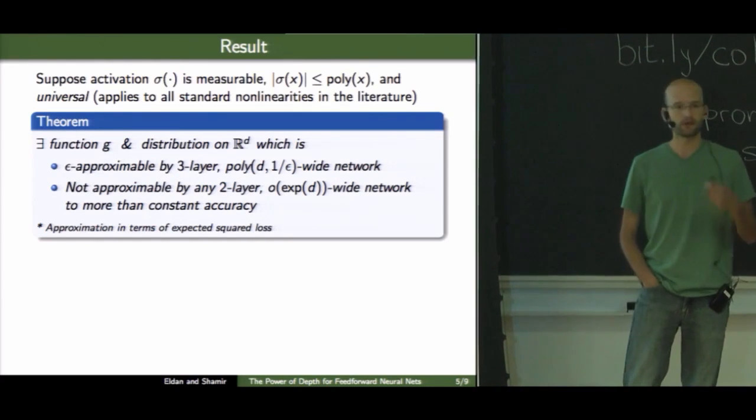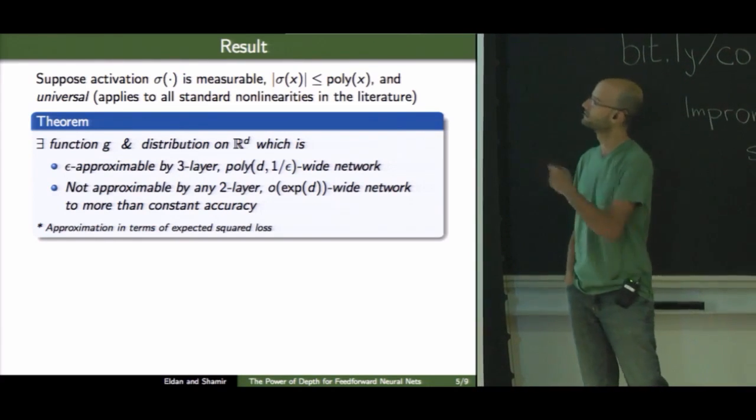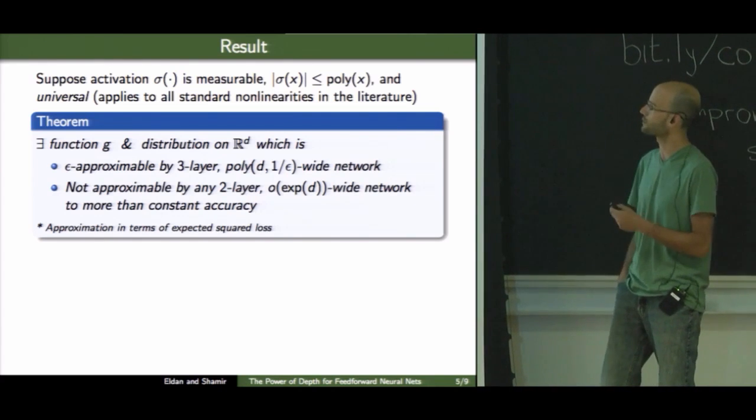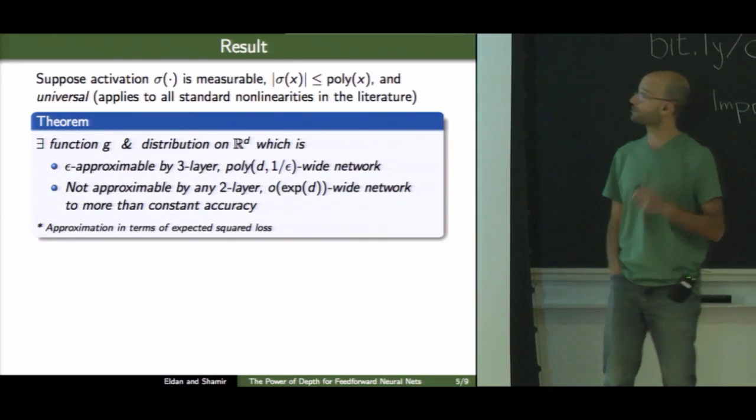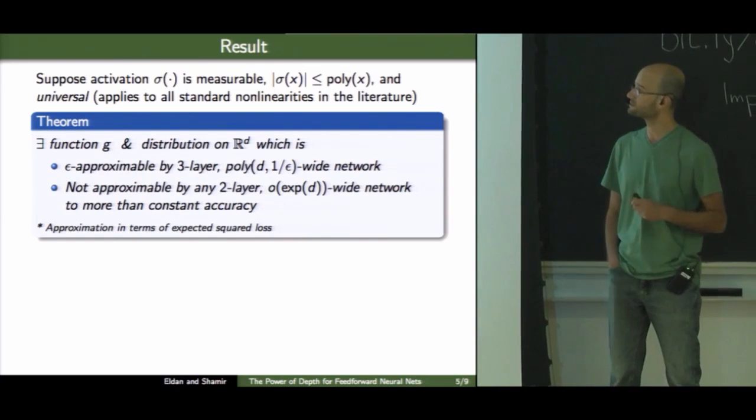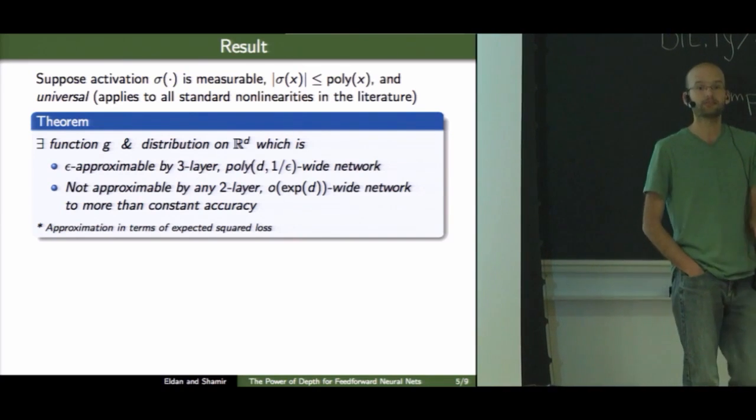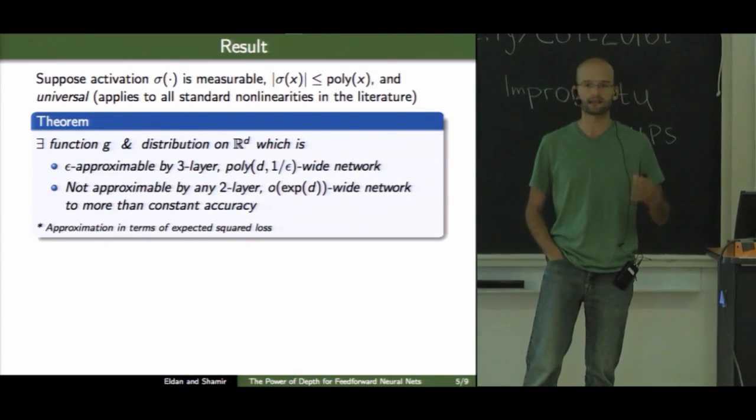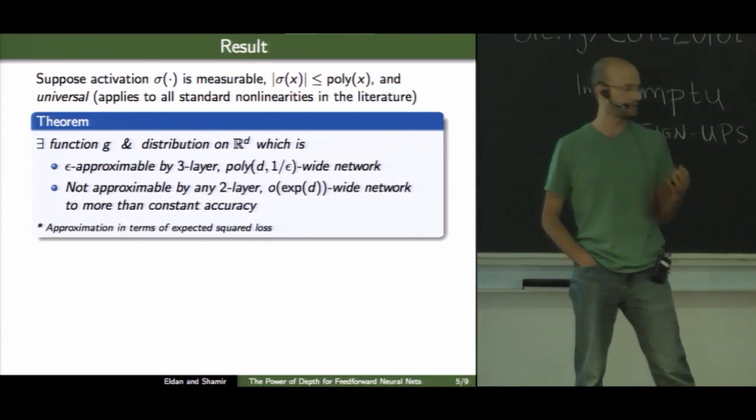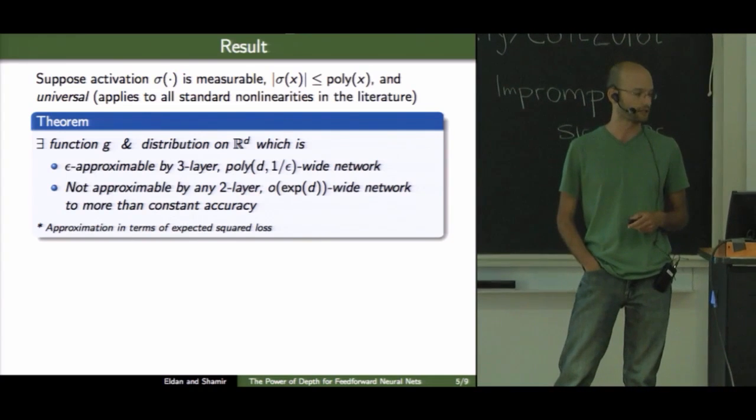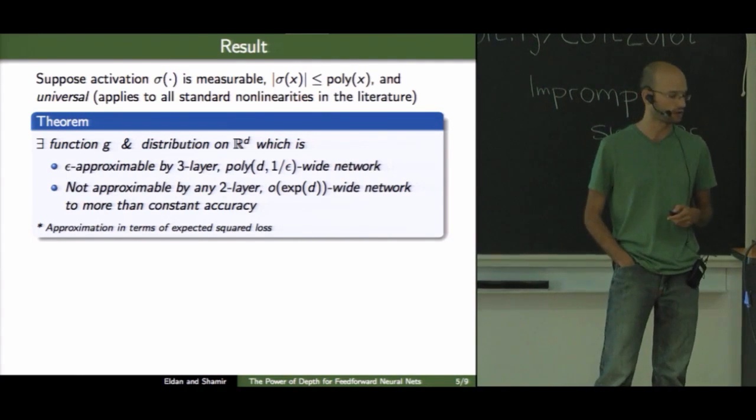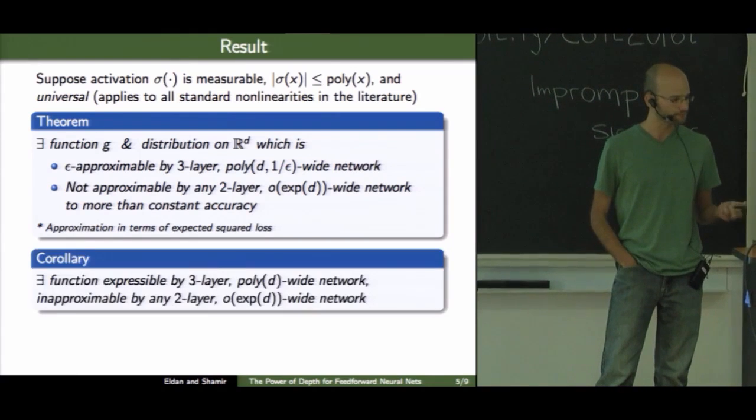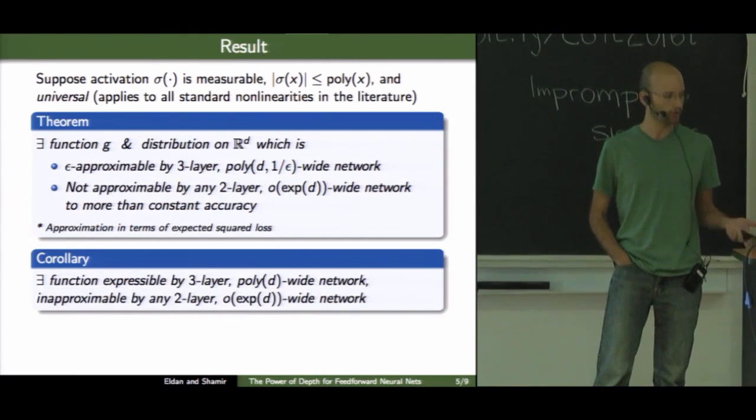So, what the main theorem says is that there exists a function and some distribution in R^d, which on one hand can be approximated arbitrarily well by a three-layer network of polynomial size. But on the other hand, any two-layer network, you cannot approximate unless its size is exponential in the dimension. And we measure approximation here in terms of the expected squared loss.